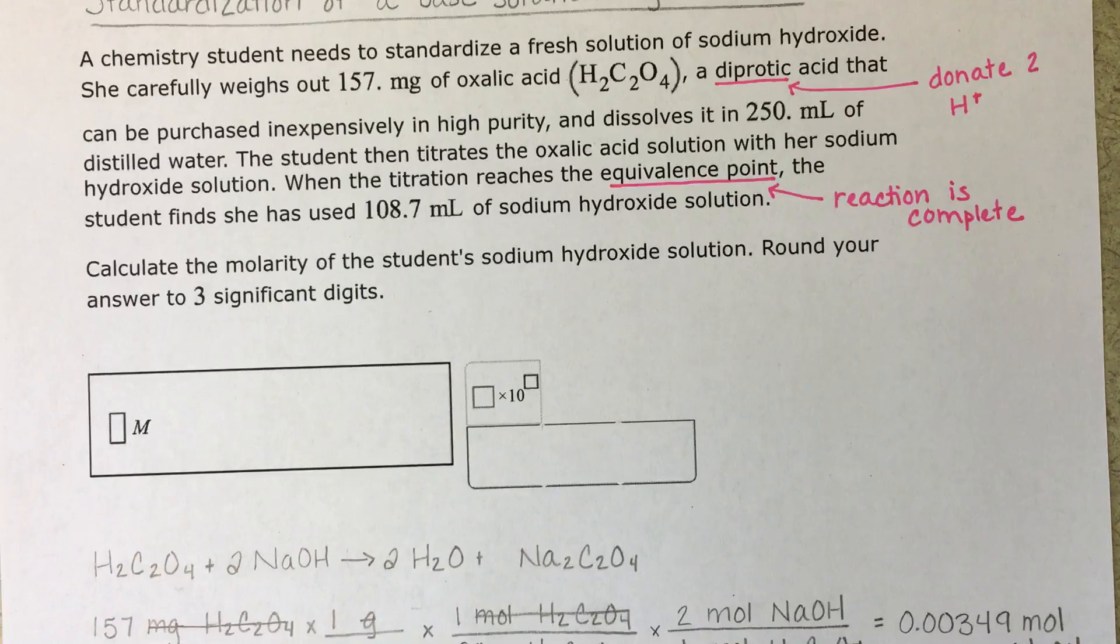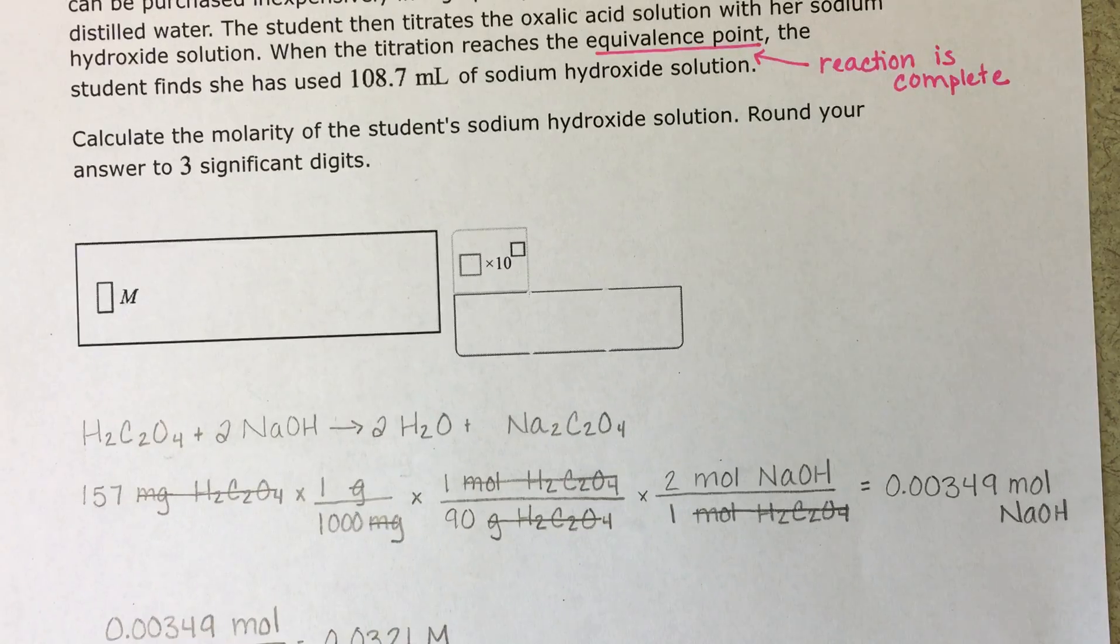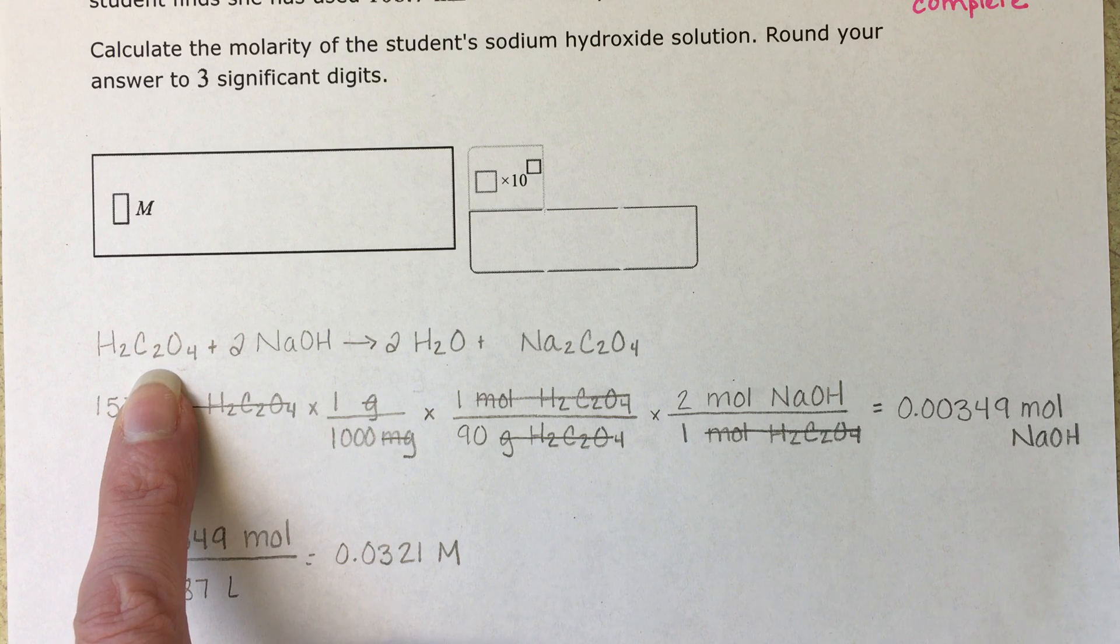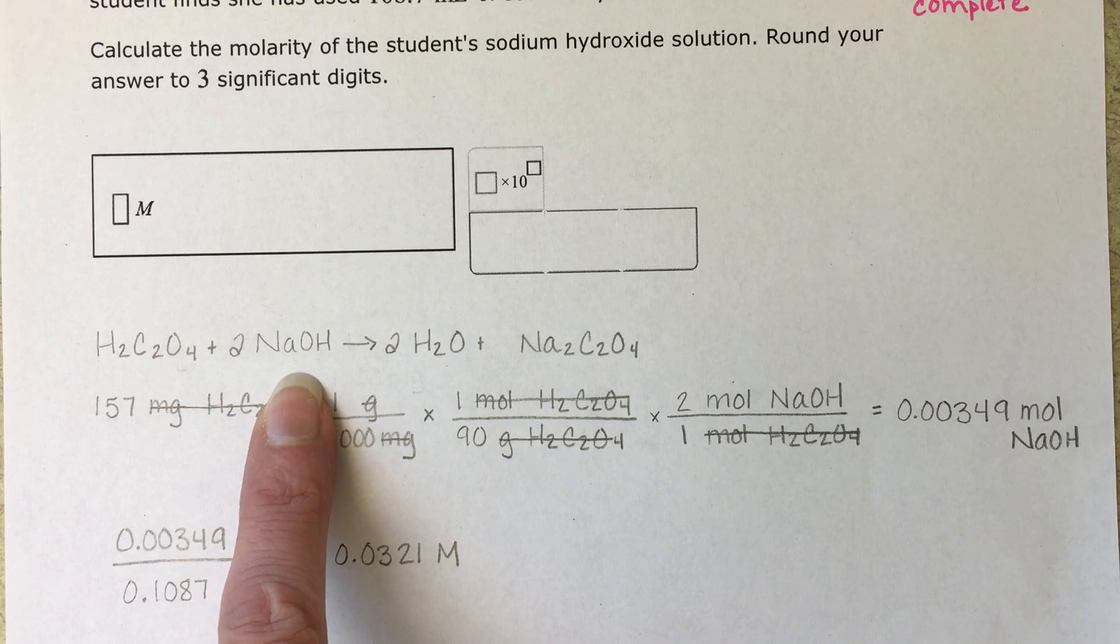And with all stoichiometry problems, the first thing that you want to do is write out a balanced equation. So that's the first thing that I've done here. The acid and the base reacting with each other.